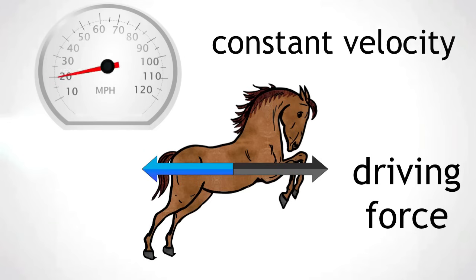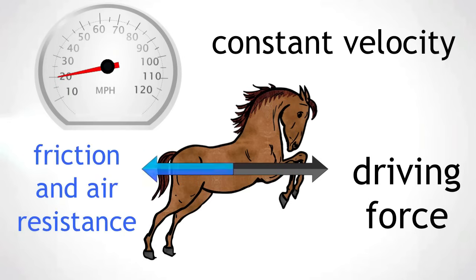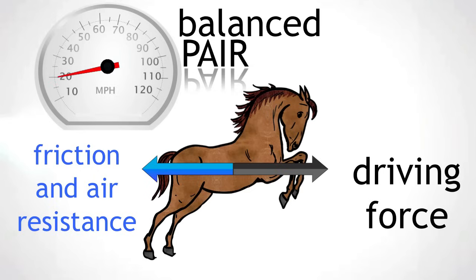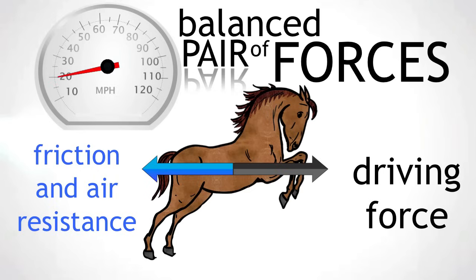And if the horse is travelling at a constant velocity, the force of friction and air resistance are equal in size, but opposite in direction to the driving force. The driving force is now balanced by friction and air resistance. A balanced pair of forces. And the horse now travels at a constant velocity.